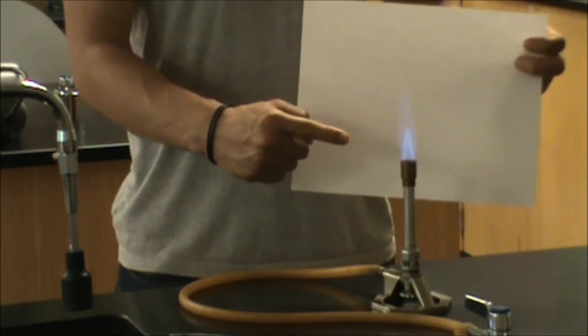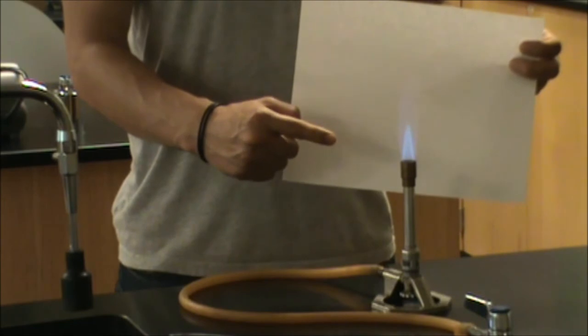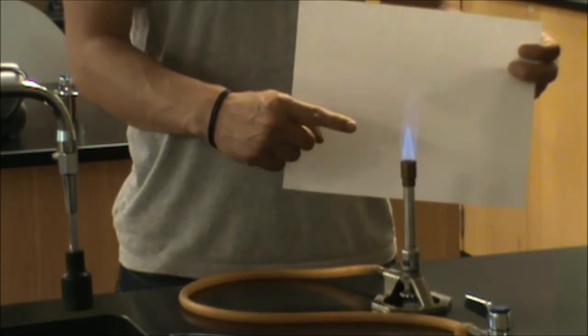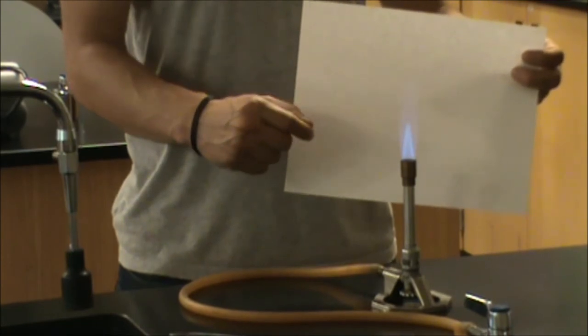So depending on what you're using the Bunsen burner for, you might want to use the different parts of the flame. For example, if you're trying to ignite a strip of magnesium, you want a very hot, intense flame. You'd want to hold it right in the tip of the bright blue part of the flame, that's the hottest part.